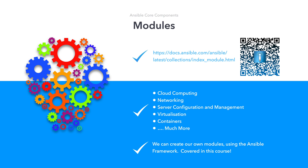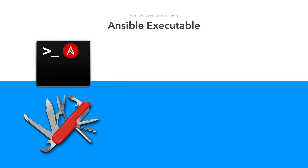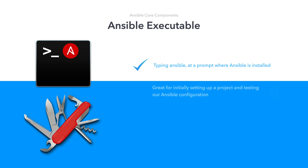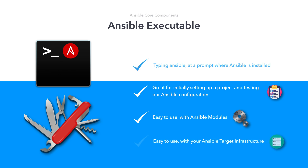The next core component is the Ansible executable, a highly versatile tool that acts as a Swiss Army knife for your automation requirements. Simply type in Ansible on a system where Ansible is installed. It's an excellent gateway point for starting an Ansible project, for setting up your Ansible execution environment and for everyday usage. As a tool, it allows you to interact with both Ansible modules and your Ansible target infrastructure, extending the power of modules to the command line.